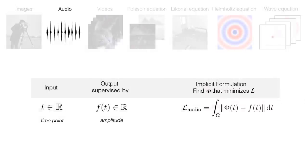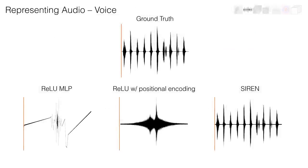A similar experiment can be carried out to fit an audio waveform, where the network maps time points T to an amplitude, and is directly supervised by the ground truth audio amplitude. In this scenario, tested first on a voice signal, SIREN is the only architecture able to fit the waveform at all.